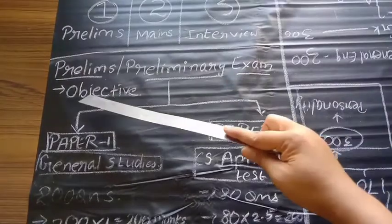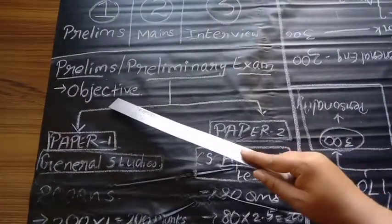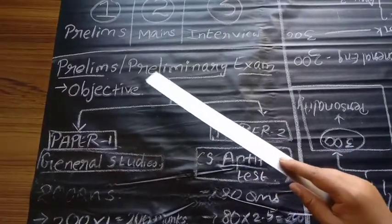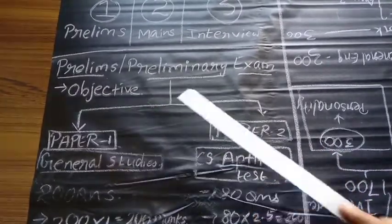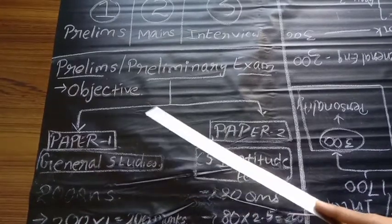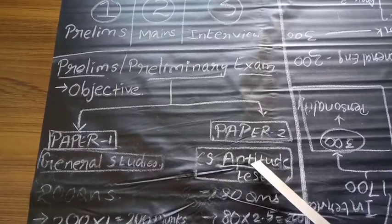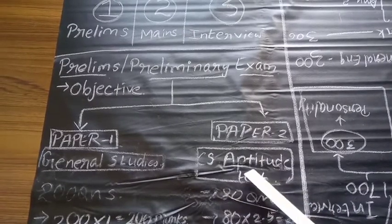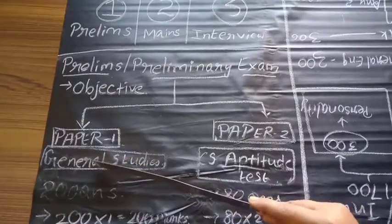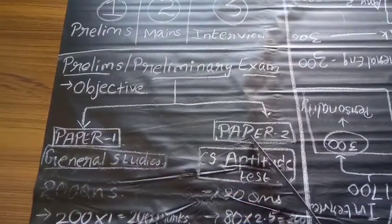For the prelims, which is also called preliminary examination, it is objective type questions and there will be two papers. Paper 1 and paper 2. Paper 1 is for general studies and paper 2 is for the CSAT aptitude test, that is your common civil service aptitude test. You need to appear for both paper 1 and paper 2.